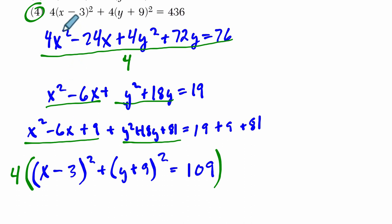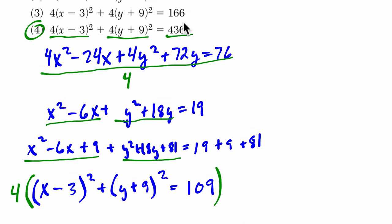Right? 4 times x minus 3 squared. There it is. Times y plus 9. There it is. And 109 times 4 is 436. So it's just a problem where we're manipulating the algebra to look at equivalent forms. All right, I hope that helped.